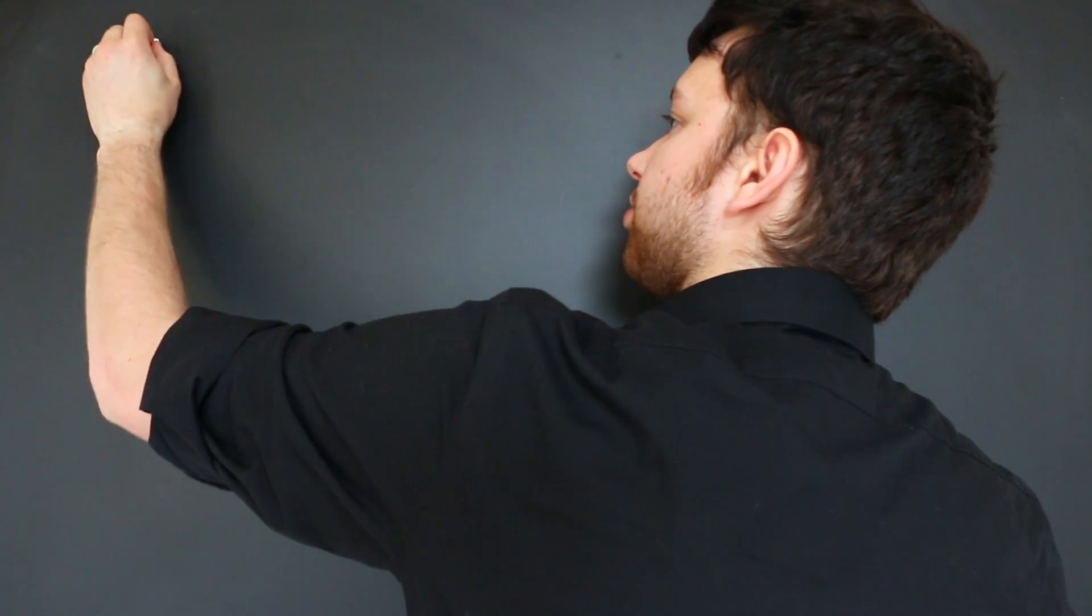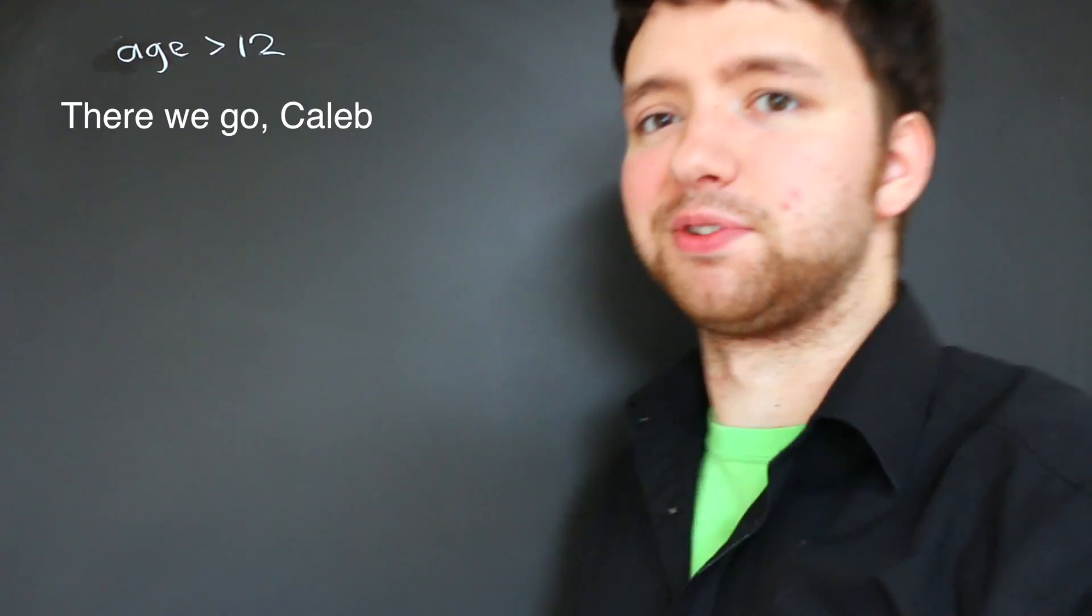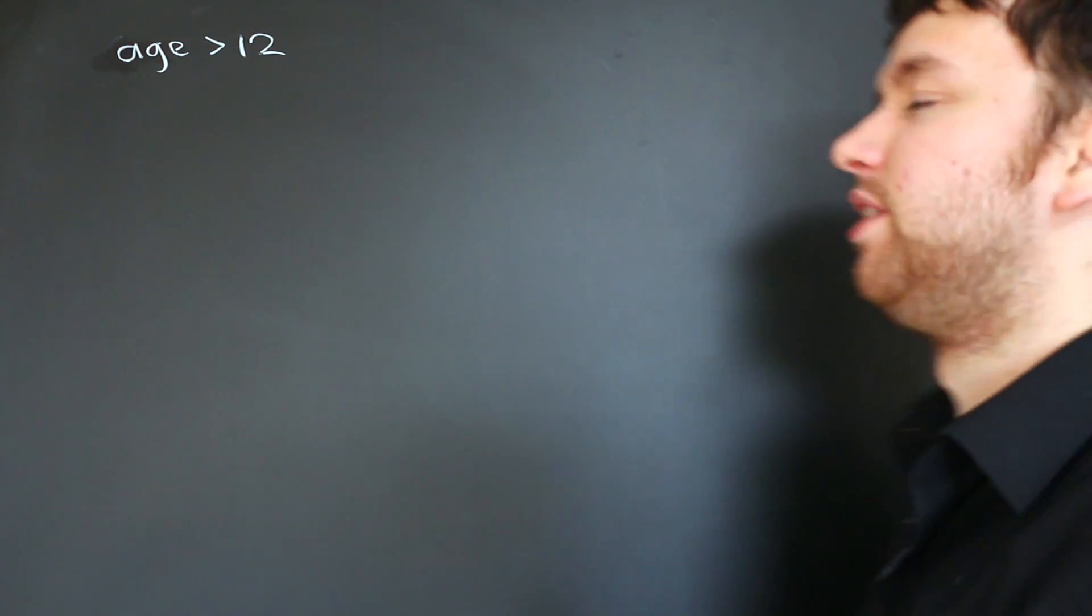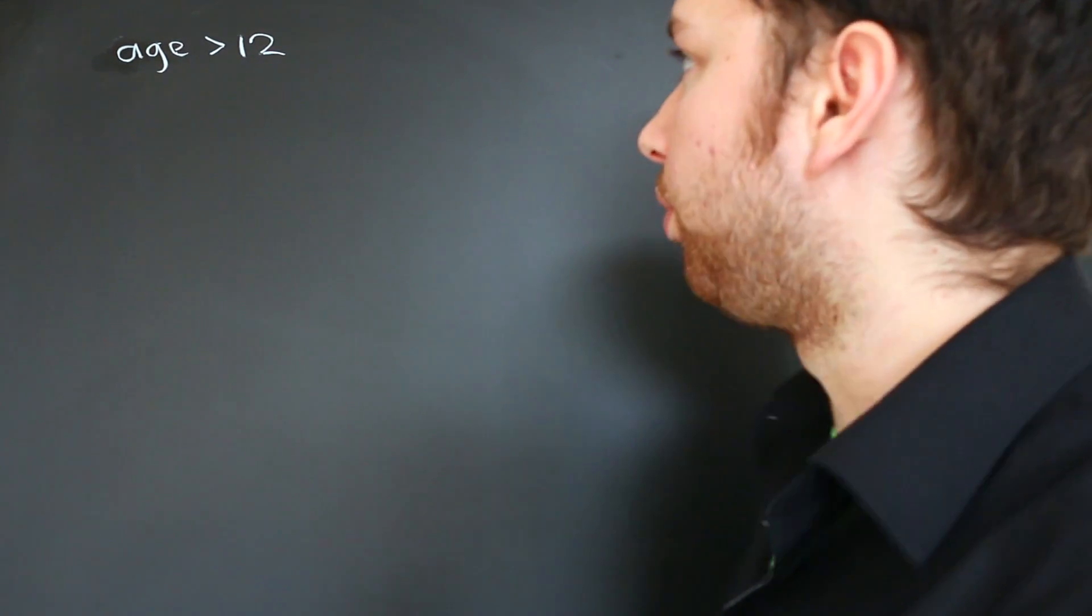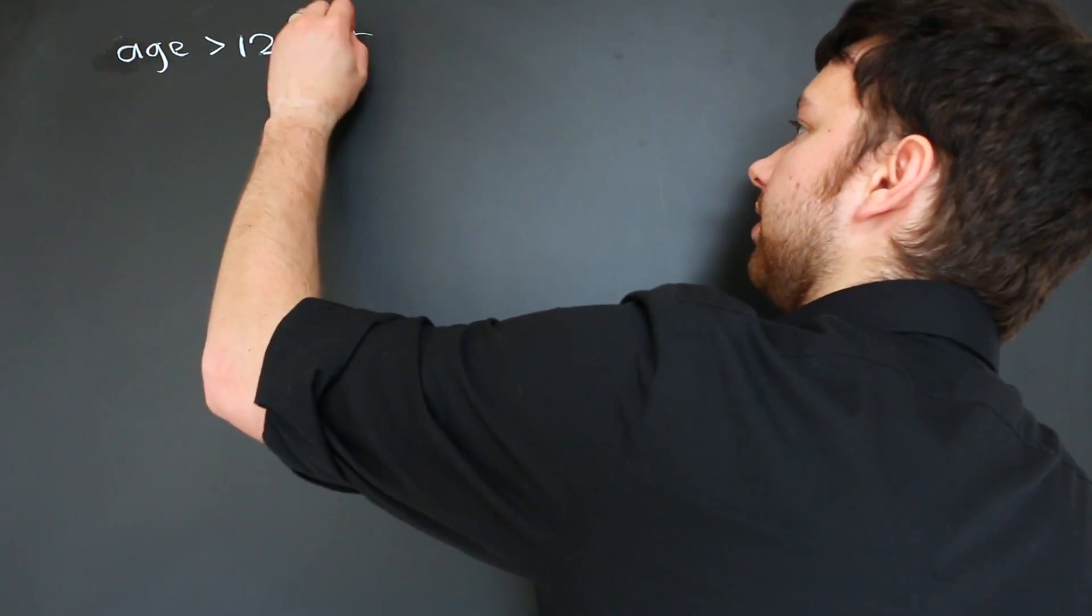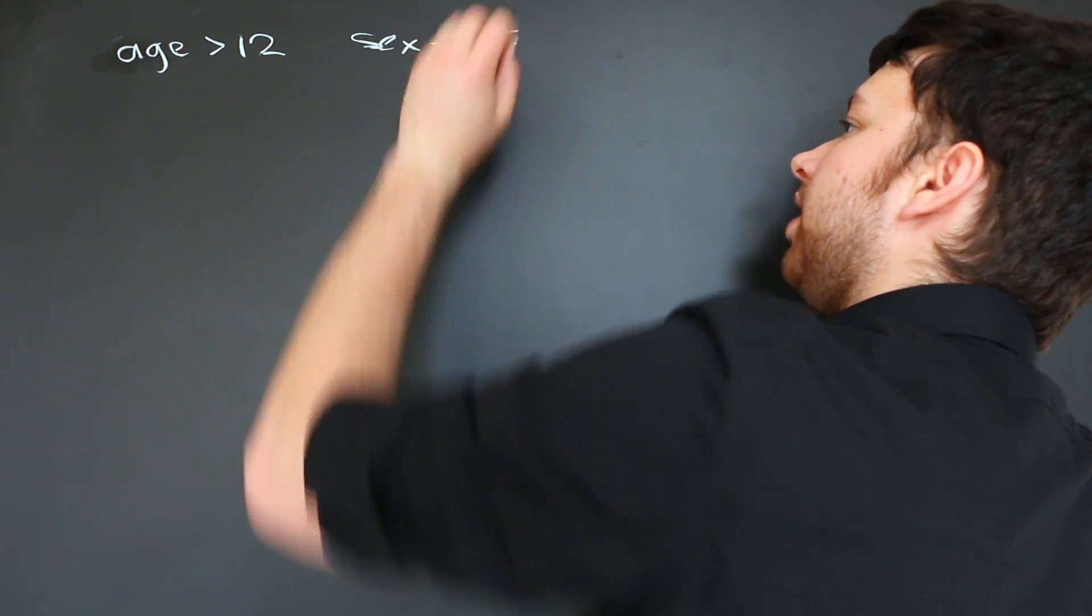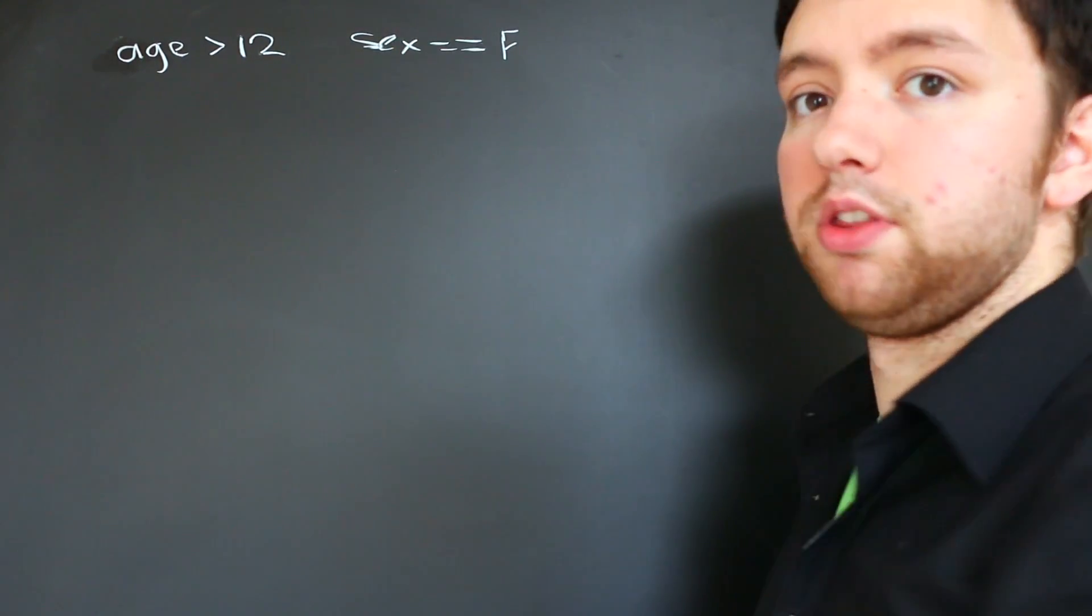And truth tables are huge when it comes to Boolean algebra or Boolean logic as it allows us to easily come to conclusions with what the values are. So we start with our first expression. Age is greater than 12. I think it was 12. Basically, if you're a teenager, you can access this application. But what if we wanted to only let females use this application? Well,